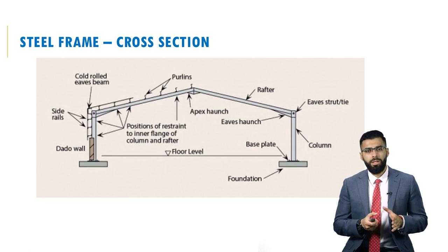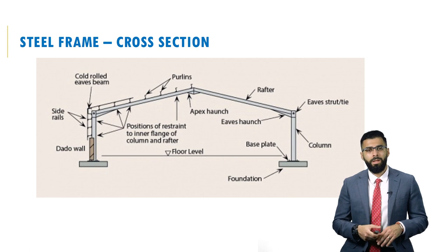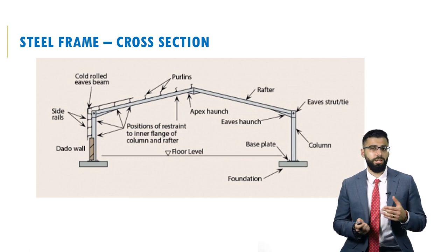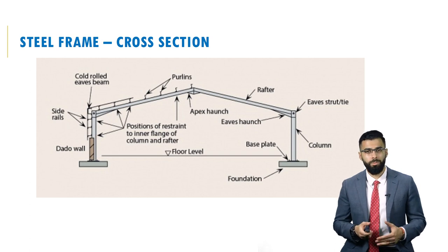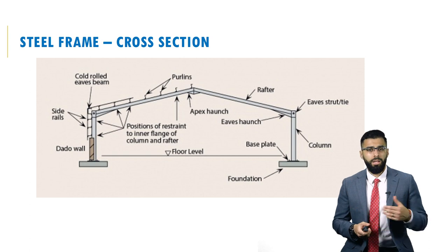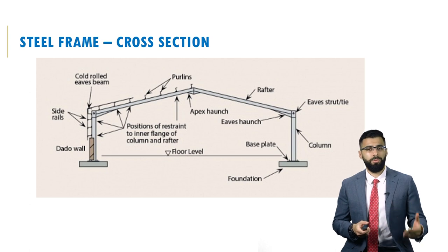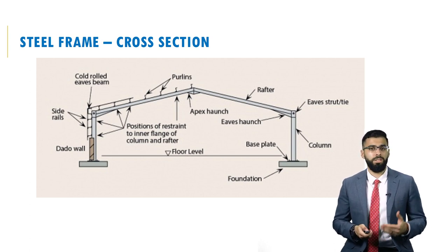A structural designer needs to break the overall structure down into stages for design. Starting from the bottom, you need a base plate to link the steel structure to the foundations — this base plate must be designed to withstand stresses imposed from the columns. The columns connect to rafters, which also need to be designed. The designer must also consider the eaves, strut and ties, eave haunch, apex haunch, and any purlins lying on top of the rafters.